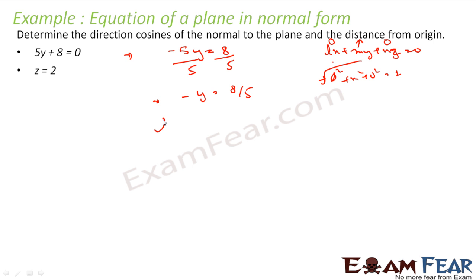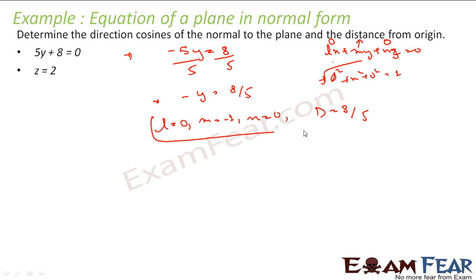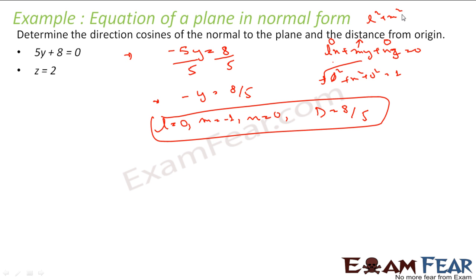So L is 0. Because this equation takes the form My, M is minus 1, N is also 0, and D is 8 by 5. That is my answer. The equation is always Lx plus My plus Nz equals 0, where L² plus M² plus N² equals 1. The only thing I am doing is converting any equation into this required form.